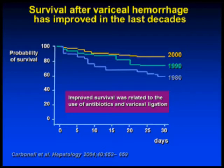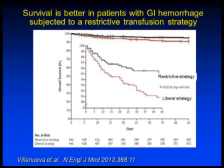This is a series out of France — and there are several series like this — that shows mortality over time has been decreasing over the decades. In this particular study, the improved survival was related to the use of prophylactic antibiotics, which we will talk about, and the use of variceal ligation instead of sclerotherapy. So we can actually add something else that will improve the survival of these patients.